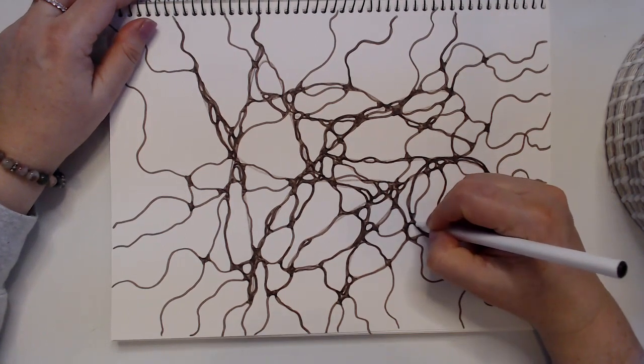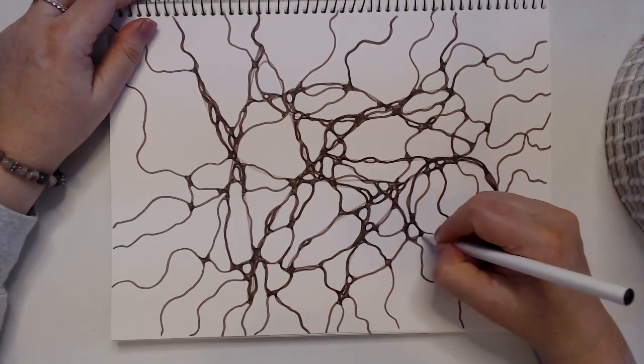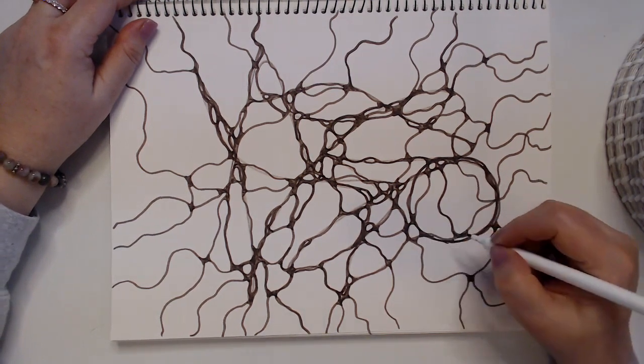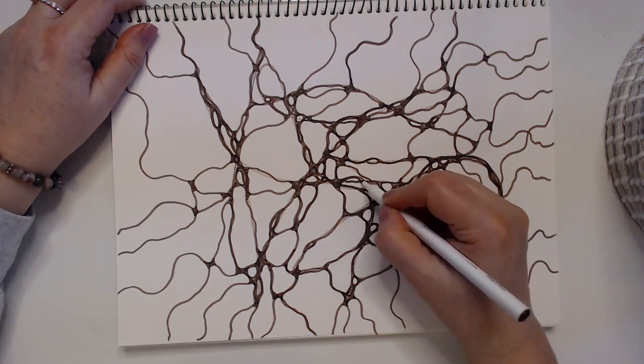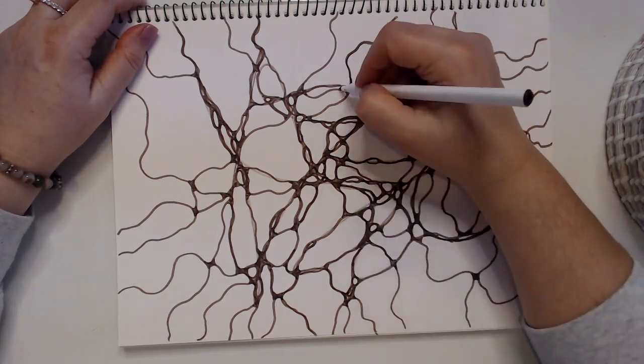So, but now you really need to round all the crossings again. See how everything gets integrated into one pattern. Nothing exists by itself. And that's the basic of NeuroGraphica.